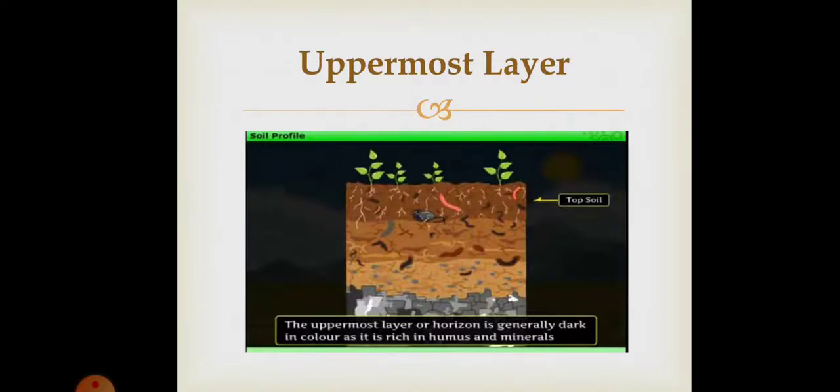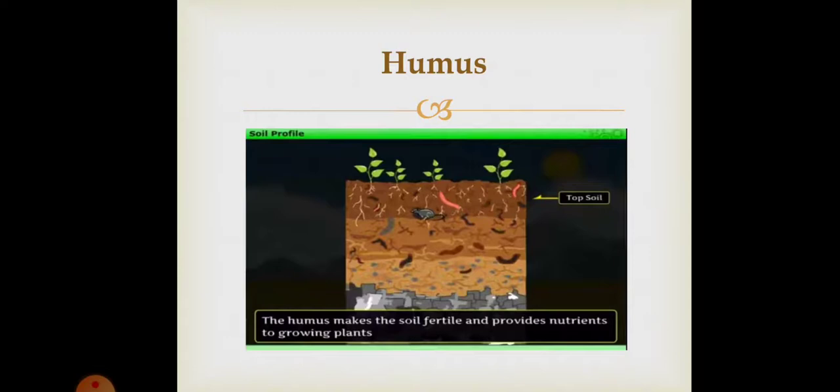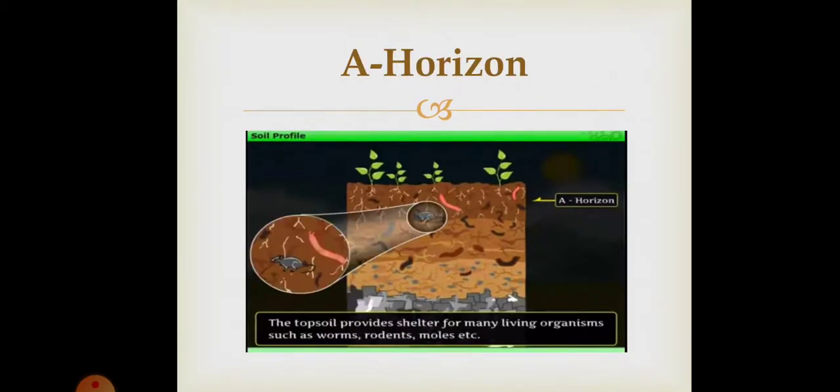The uppermost layer or A horizon is generally dark in color as it is rich in humus and minerals. It is also known as topsoil. The humus makes the soil fertile and provides nutrients for the growth of trees and plants. The topsoil provides shelter for many living organisms such as worms, rodents, moles, etc. The roots of smaller plants can also be seen here.